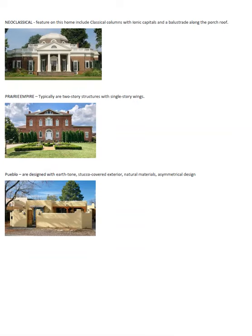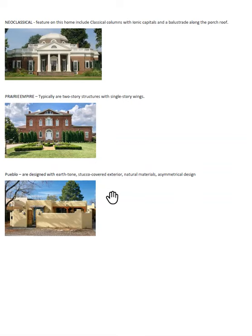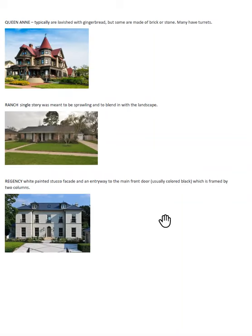Neoclassical features classical columns, iconic capitals, and balustrades — that's the ornate spindles along the porch and roof. Prairie style is a two-story structure with single-story wings. See this wing and this wing — it's a two-story house but it has single-story sections on either side. Pueblo, obviously not a design you see a lot in the Midwest, is used a lot out in the West because of the natural materials available to build that earth-tone or stucco-looking structure.